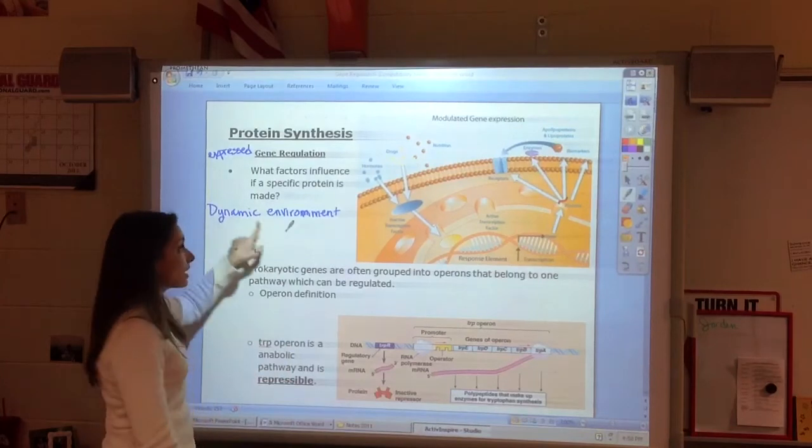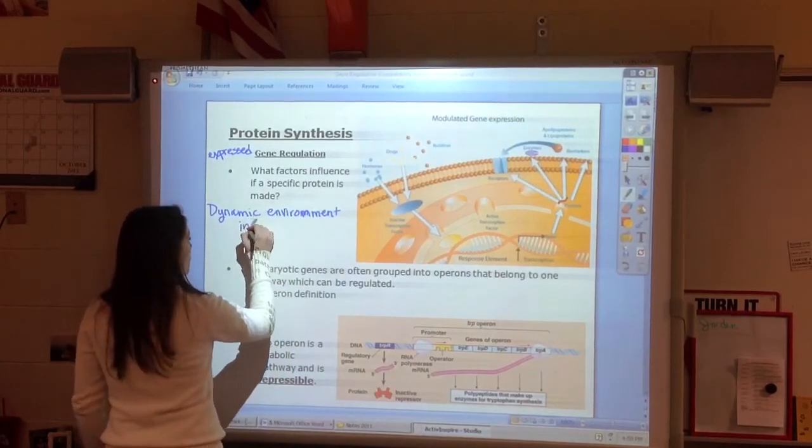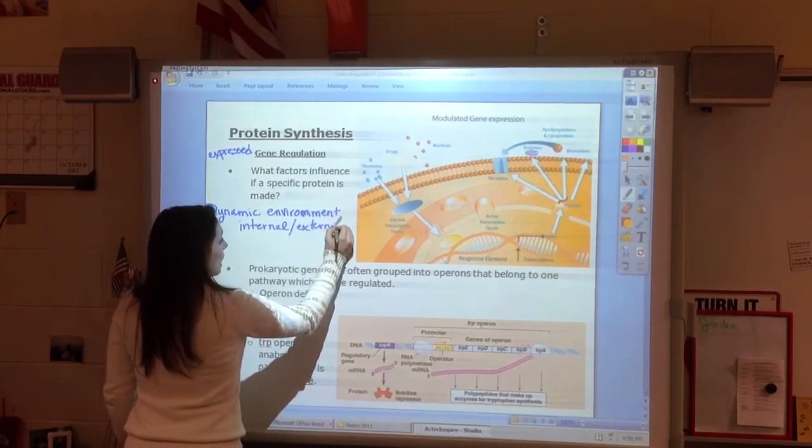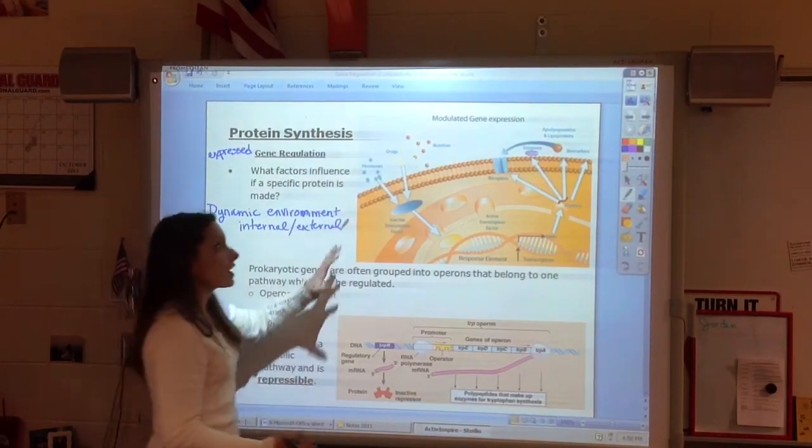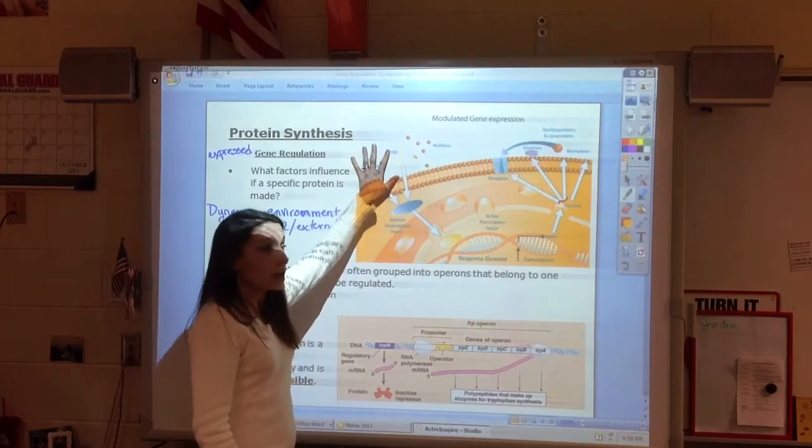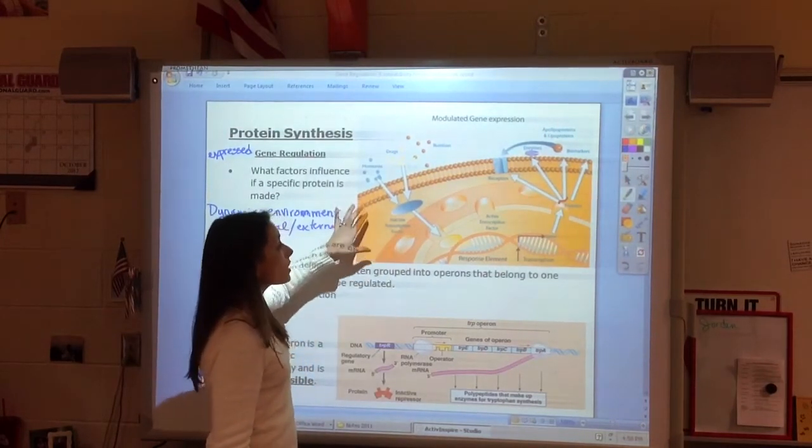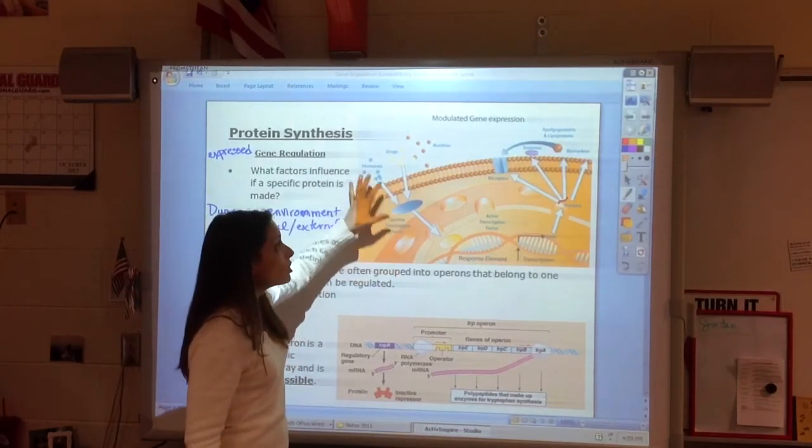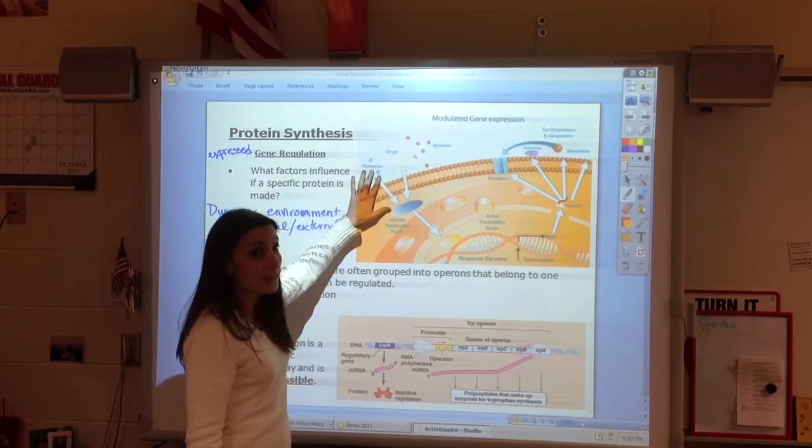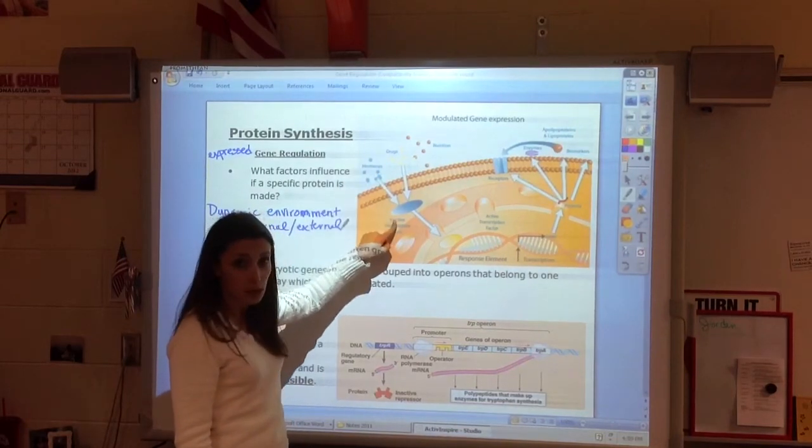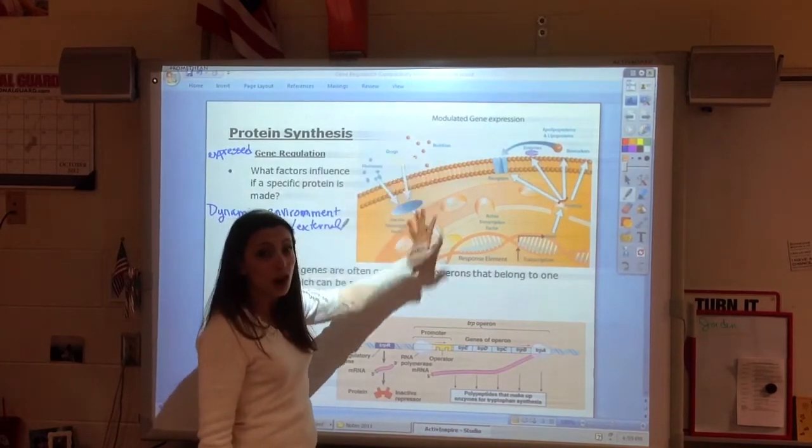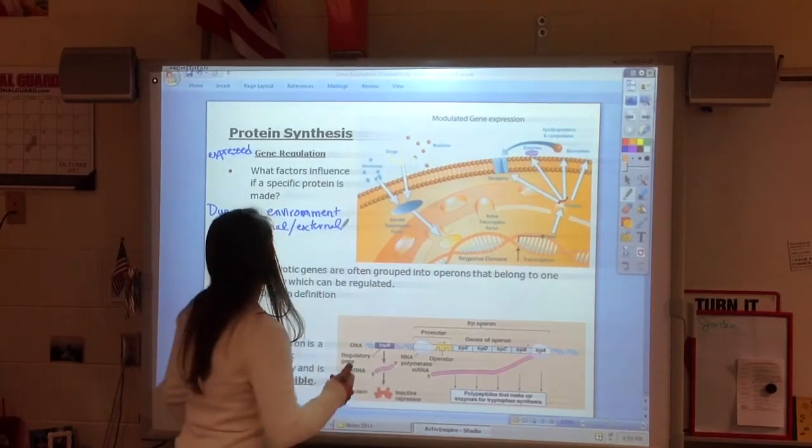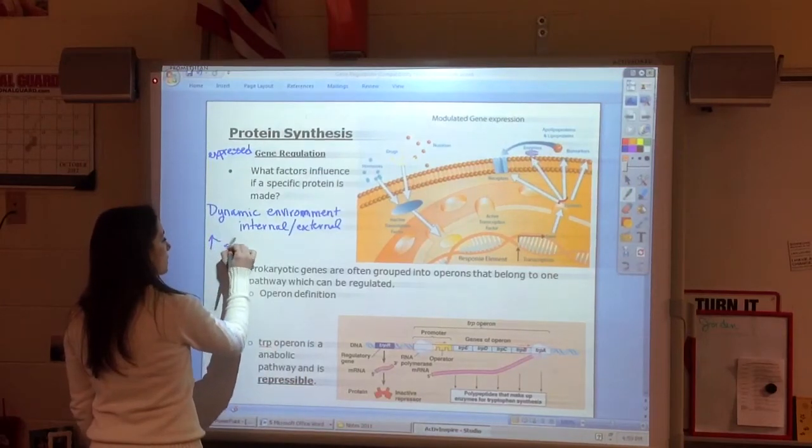This idea of a dynamic environment, both internal and external. How does the cell know if the environment is changing on the outside or even on the inside? This is where those ideas of chemical messengers really come into play. Hormones are big in that we know those are chemical messengers. But drugs, nutrition, all of these are things that can convey some sort of signal. We're really going to see a really high level of signaling.